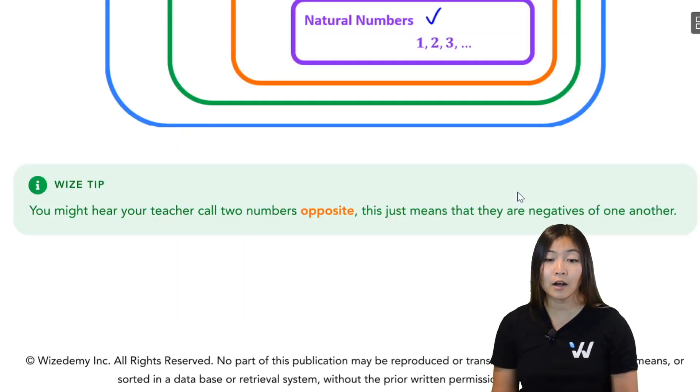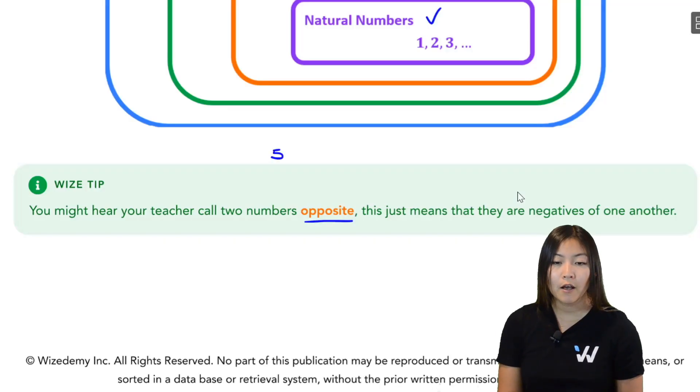Some of you might have heard of the word opposite numbers. If your teacher calls two numbers opposite, all they mean is that the numbers are negatives of one another. For example, five and negative five, these are opposite numbers. Negative two thirds and positive two thirds, these are opposite numbers.